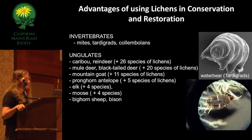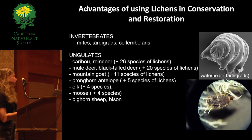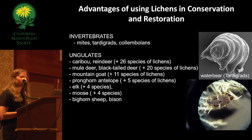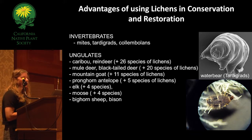What are some advantages of using lichens in conservation and restoration? They are extremely important to various invertebrates, including mites and water bears, which only occur in mosses and lichens. Many large mammals and ungulates rely on lichens for food — caribou and reindeer have been documented eating over 26 different lichen species. Mule deer, black-tailed deer, and mountain goat use over 11 species; pronghorn antelope over five species; and elk, moose, bighorn sheep, and bison have all been reported eating lichens.